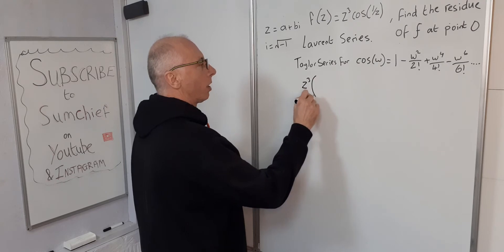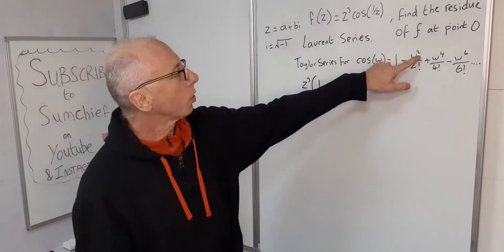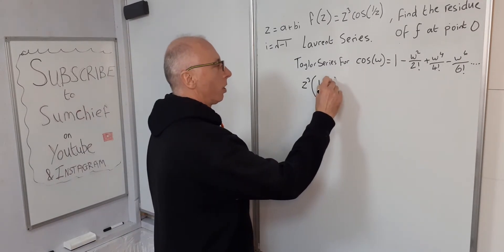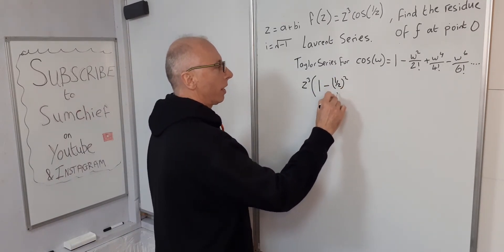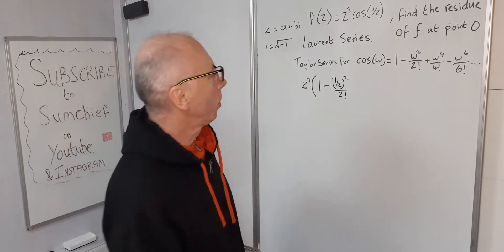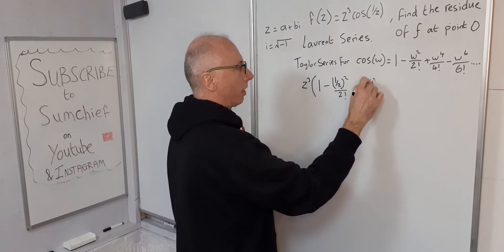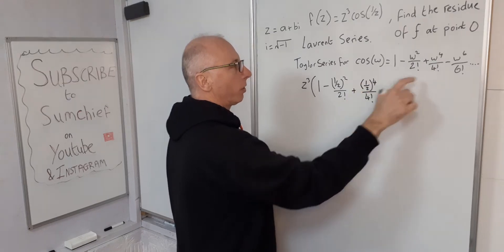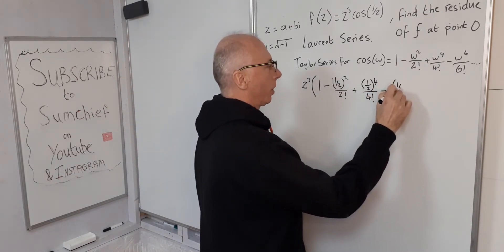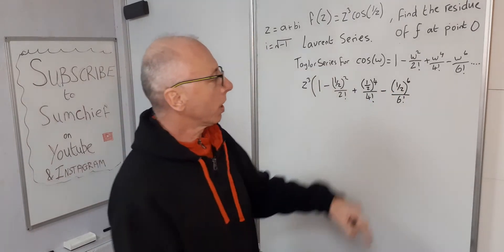So we take z cubed and multiply it by the full Taylor series with w = 1/z substituted in: z³ × [1 − (1/z)²/2! + (1/z)⁴/4! − (1/z)⁶/6! + ...], and this will keep going on forever.